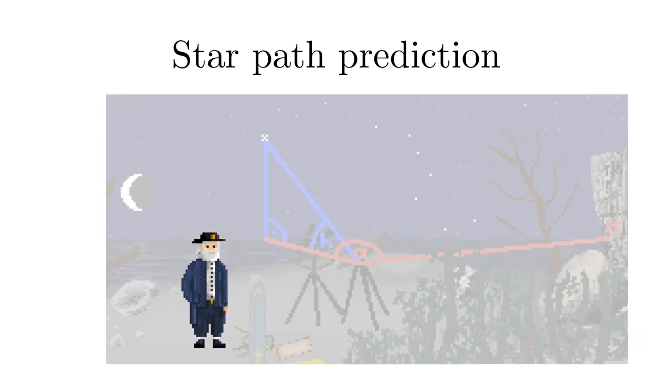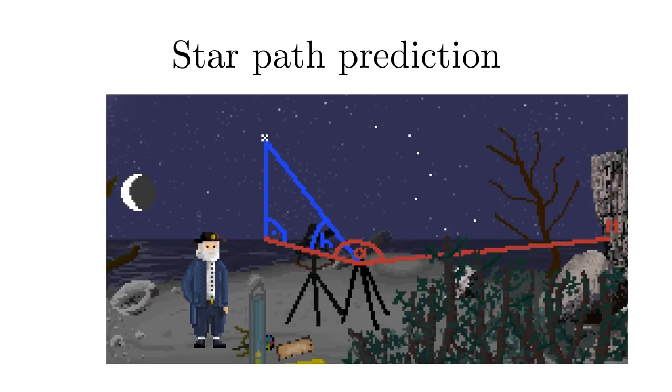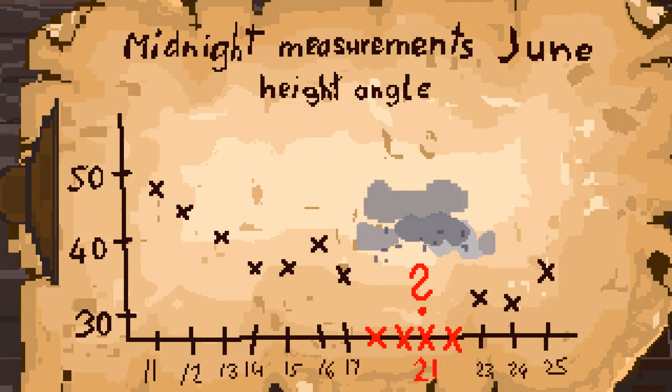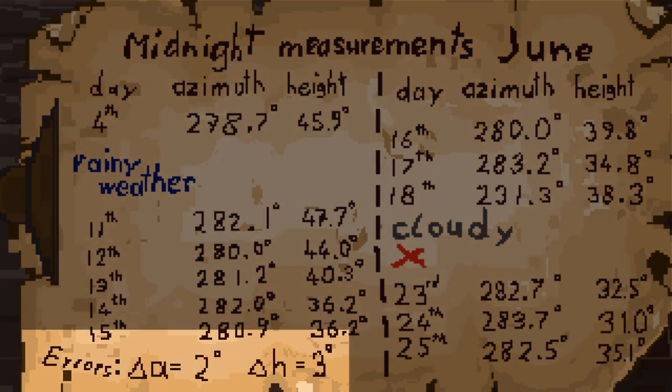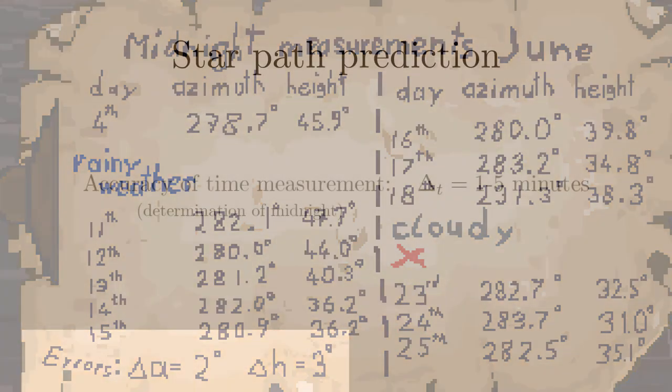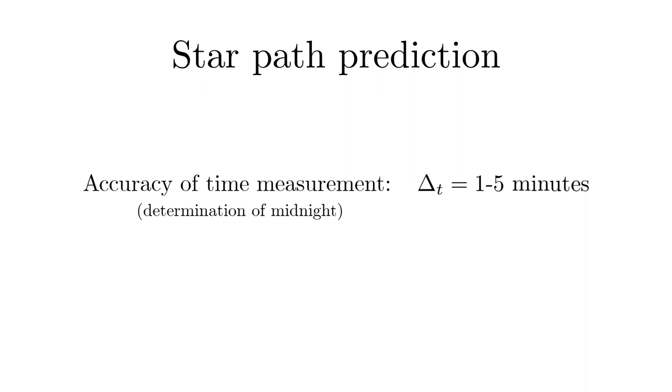Captain Venn wanted to know the azimuthal angles of the star Arcturus at midnight on the shortest night of the year. Since the weather was cloudy on that day of observation, he wanted to infer the treasure's position by interpolating his measurement values. Captain Venn knows that the accuracy of his measurements is limited by his time measurement which has an accuracy of about one minute.